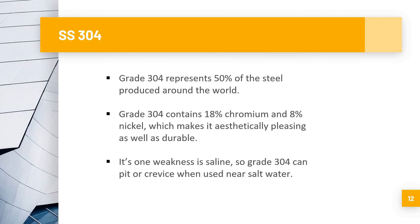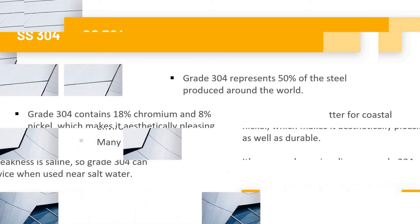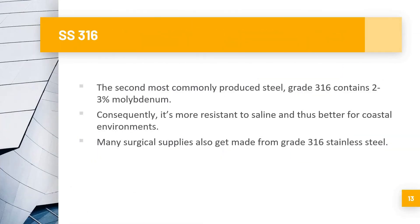The second most commonly produced grade is SS 316, which contains 3% molybdenum. Consequently, it is more resistant to saline environments and performs better in coastal and many surgical environments. Many surgical supplies are also made from SS 316 stainless steel.